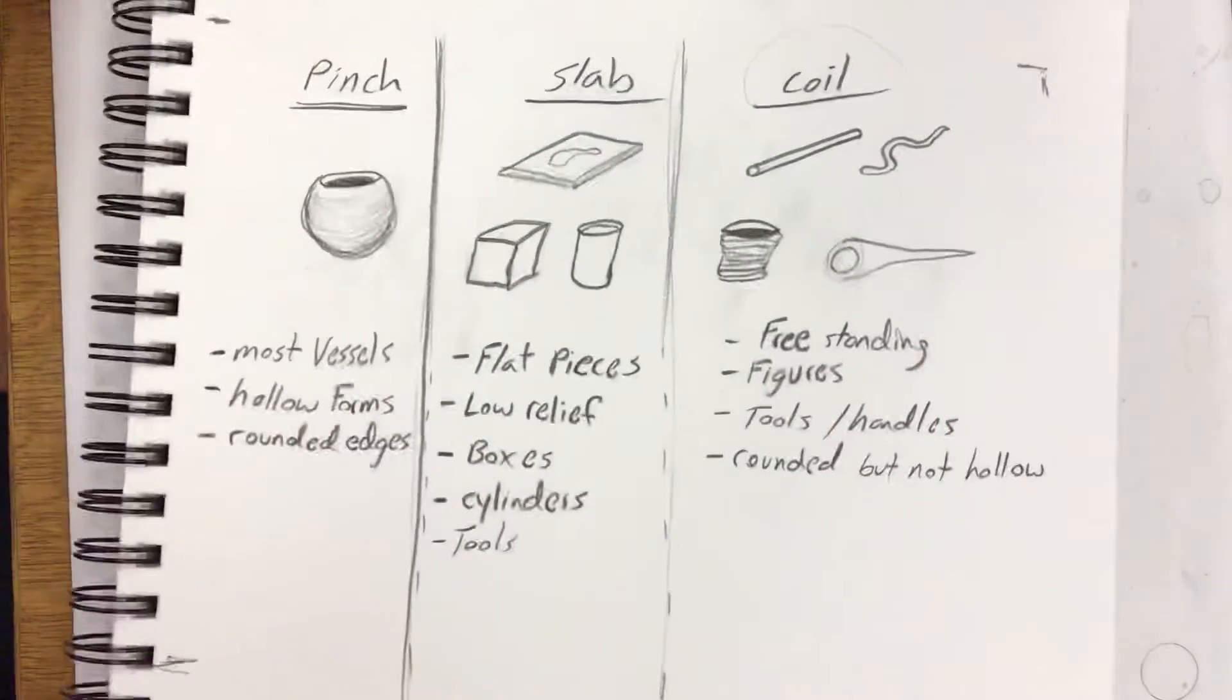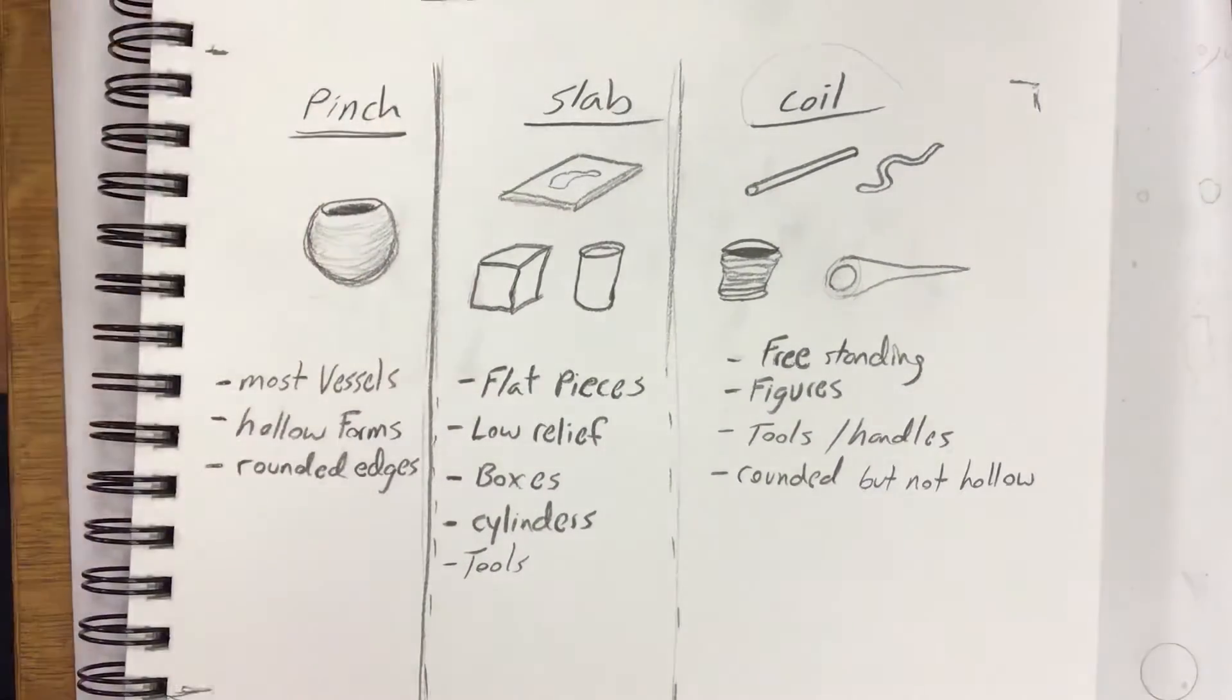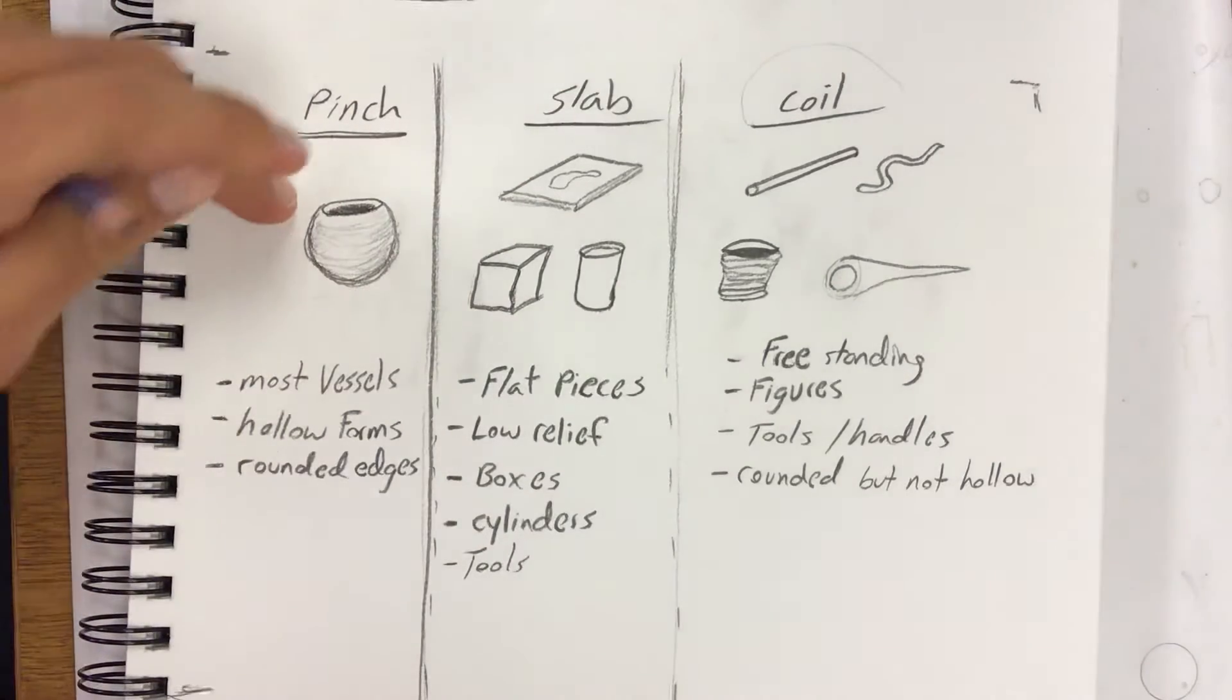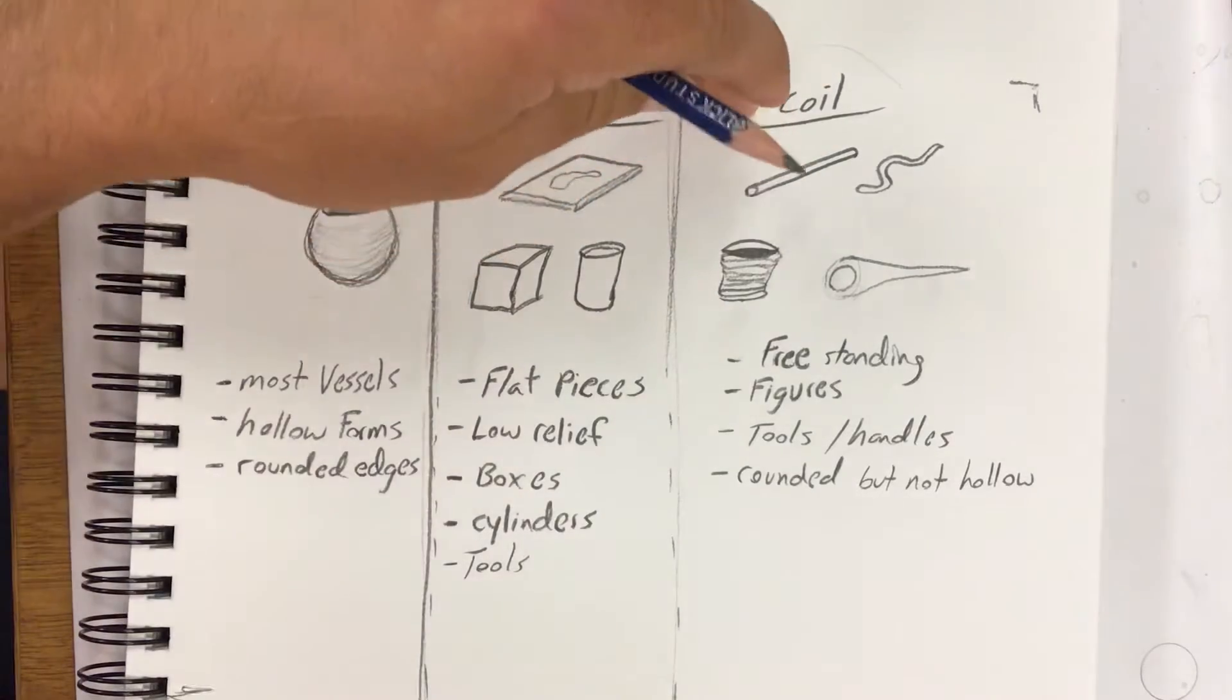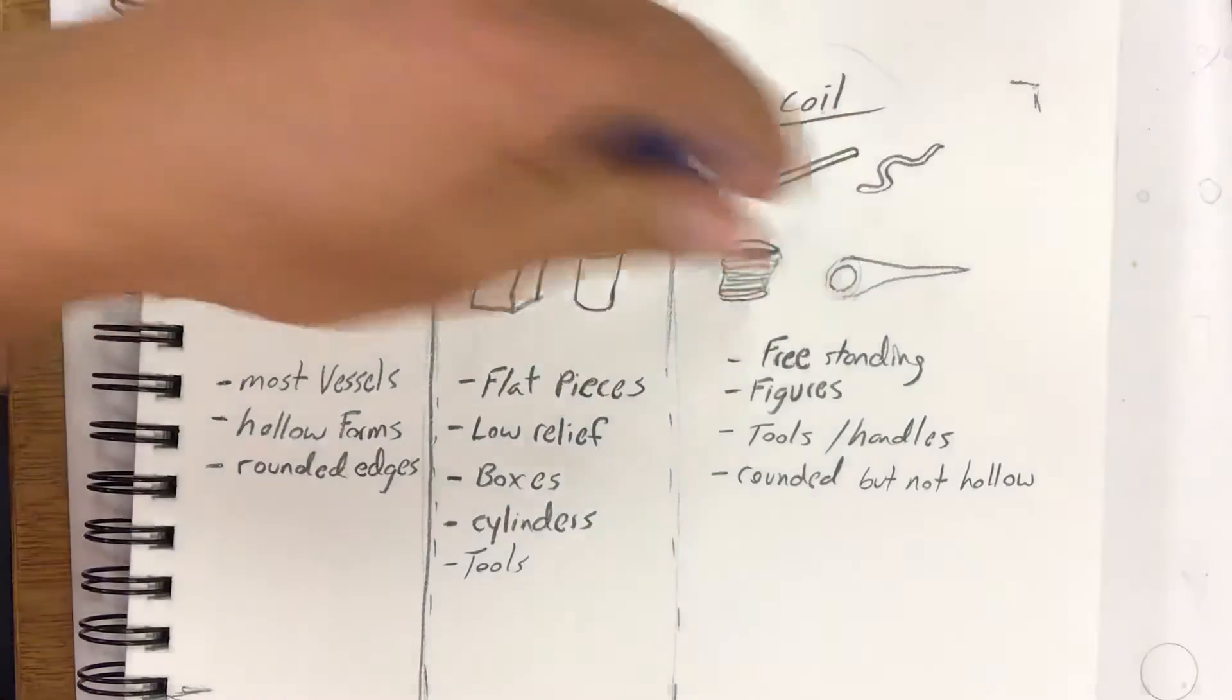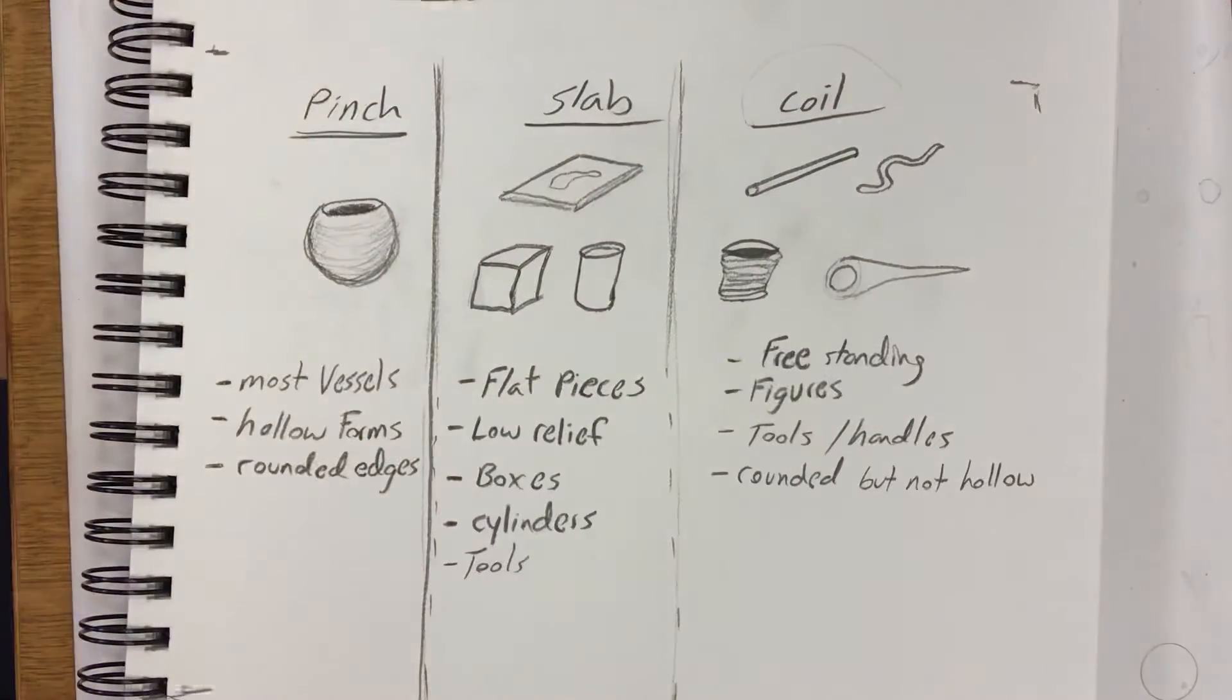So looking at your sketch, what are some things that you could do? What category does your piece fall into? Know that it could be a combination. You could use pinch for part of yours and then add on coils to it. You could do slab for most of yours and then add on coils to it, or really any combination of the three of these.